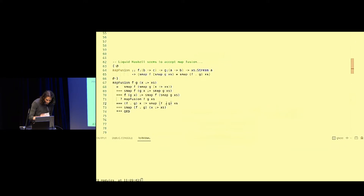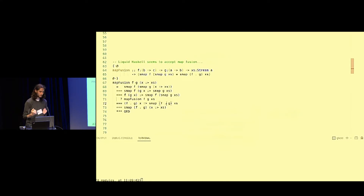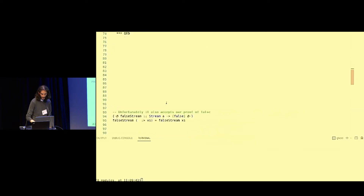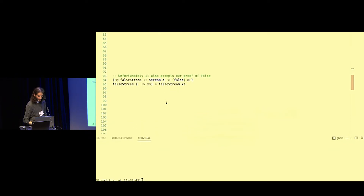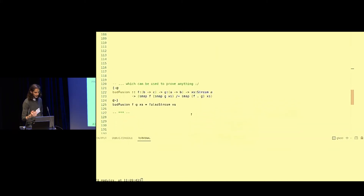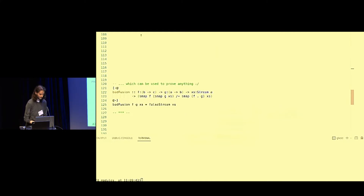What are we doing here exactly? We're invoking an inductive hypothesis but we don't actually reach something we can hold in our hands. By doing this baseless induction, we can actually use Liquid Haskell to prove false — we can just say it's false and defer it indefinitely. A proof of false is generally bad because using false we can prove anything. This bad fusion property proves the negation of the map fusion using a false stream as evidence.